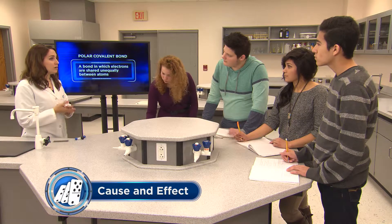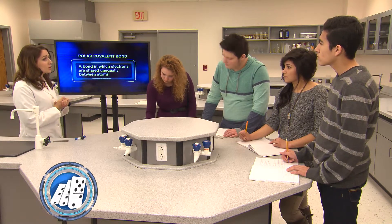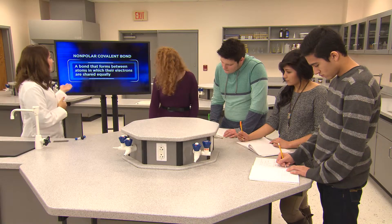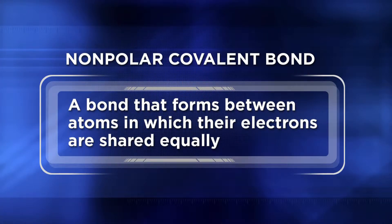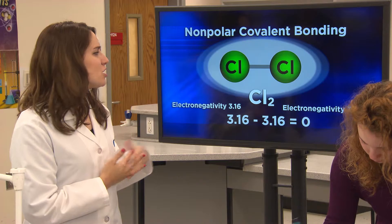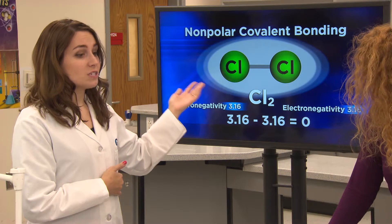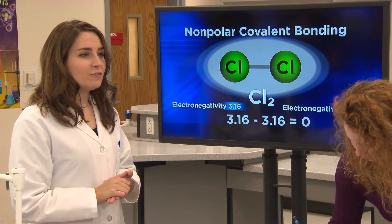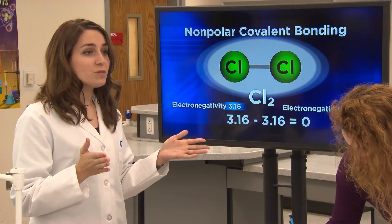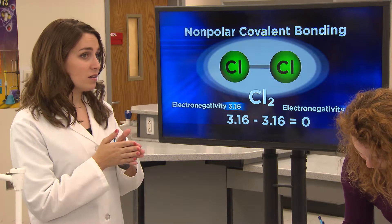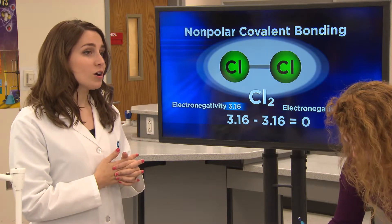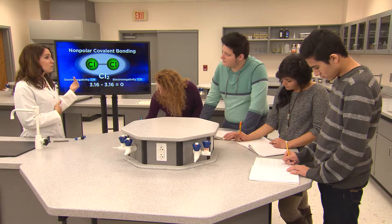Now let's compare the polar covalent bond to a non-polar covalent bond, like we explored earlier with the hydrogen molecule. A non-polar covalent bond is a bond that forms between atoms in which their electrons are shared equally. Take a look at this image of a chlorine molecule, which is two chlorine atoms bonded together. Their electronegativities are identical, so there's no way there can be a buildup of electrons on either side of the structure, like we saw with the polar water molecule. It's kind of like a tug-of-war battle where the opponents are evenly matched — the rope stays taut in the middle, keeping both sides together. That's how a non-polar covalent bond works: the electrons spend equal time with both atoms, so equal attraction to each atom.